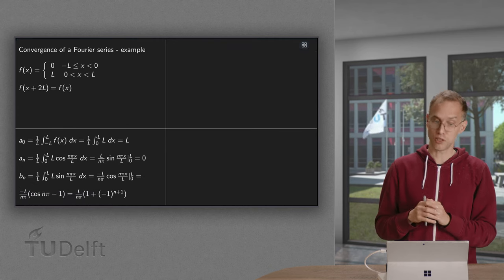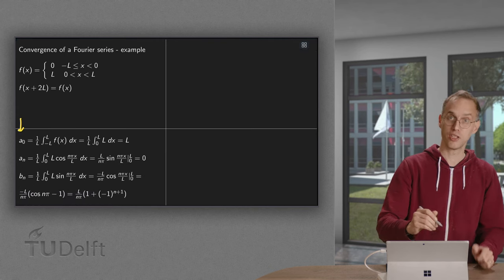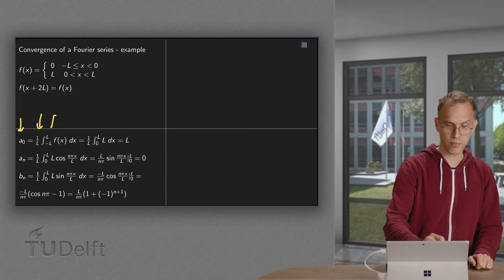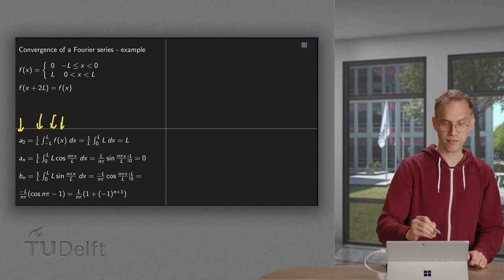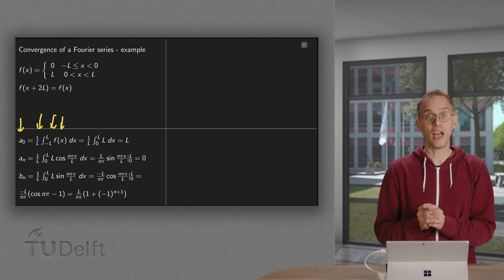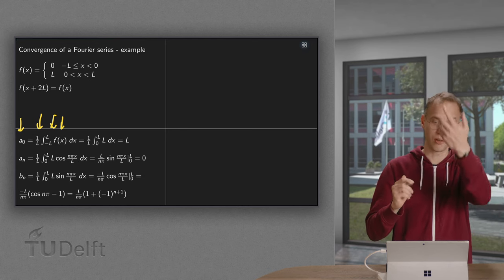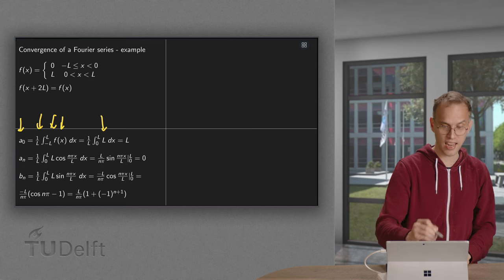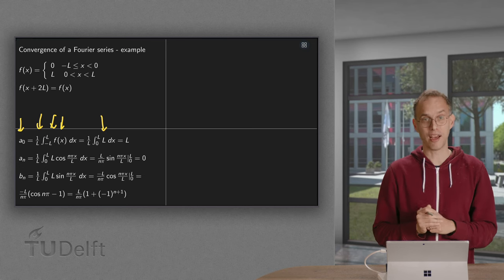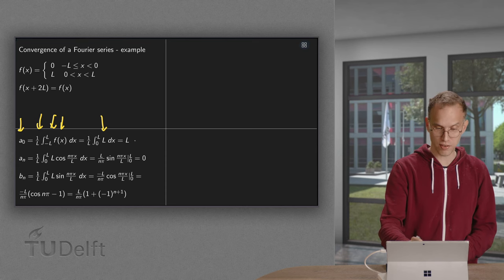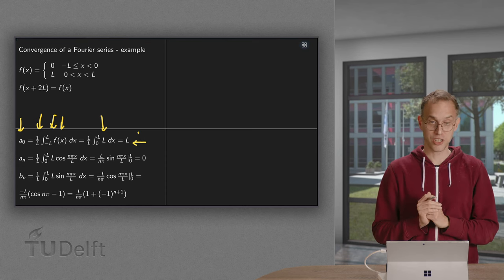So let us compute the coefficients. Well, the a₀, as we know, 1 over l integrated from minus l to l of the function f. Now, the function f is 0 from minus l to 0, so we only have to integrate from 0 to l, and there we have to integrate l. So we have 1 over l times l equals 1, and after integration we get a factor of l for our a₀.